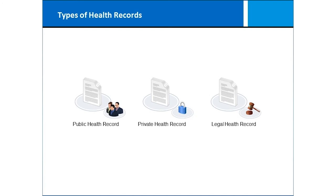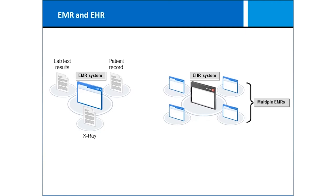And we have legal health records. A legal health record is documentation that a health care organization would provide if an official record was requested. The government has exercised authority over much of our health care data, and we have to expect that it could go to elements within the government as well as our insurance carriers and ourselves.